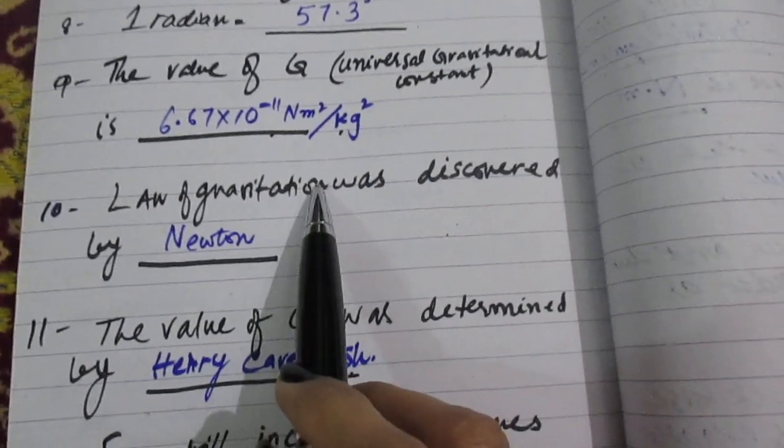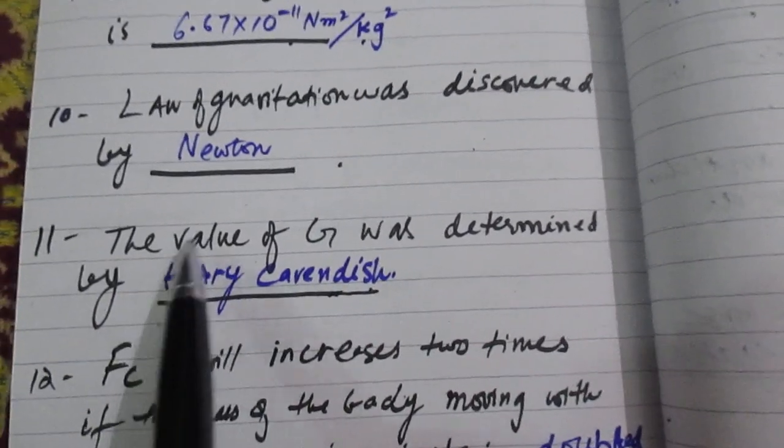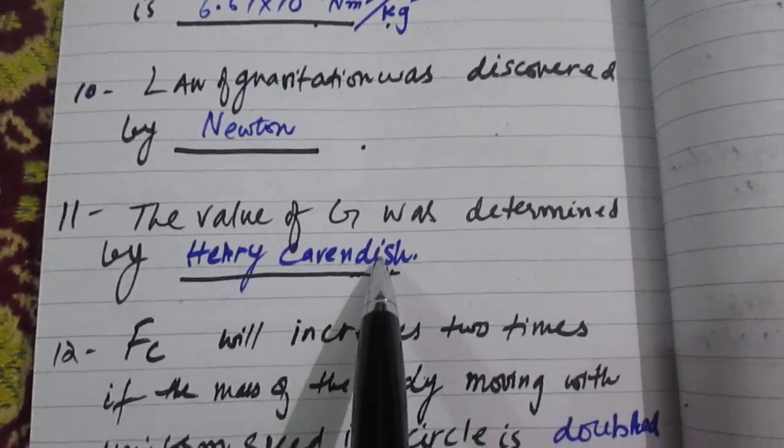Law of gravitation was discovered by Newton, Isaac Newton. The value of G was determined by Henry Cavendish.